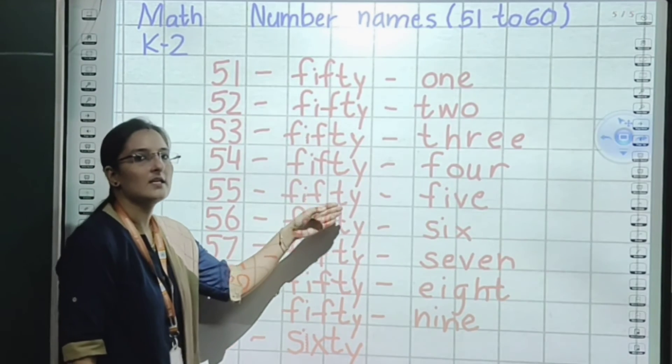Next: 59. F, I, F, T, Y — fifty, small sleeping line, N, I, N, E — nine. 59 is fifty-nine. And the last number is 60. After 59, which number comes? 60. F, I, F, T, Y — sixty. 60 is sixty.